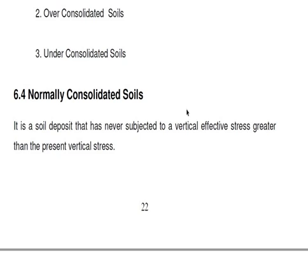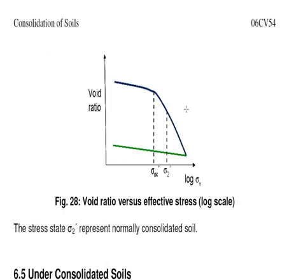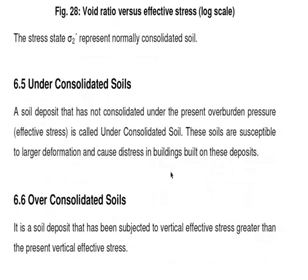Whatever pressure is being applied now is the maximum it has ever been exposed to — nothing greater has been applied in the past. Here, Sigma PC, the pre-consolidation stress, is less than Sigma 2, confirming it is a Normally Consolidated Soil.